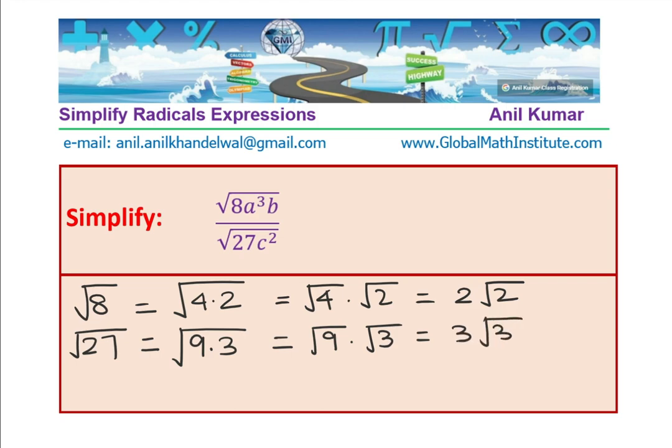Now, square root of 9 is 3 and we are left with square root of 3. So, that is how we simplify this in steps. Clear? Now, once this is clear to you, we can always write what is cube root or square root of a³.